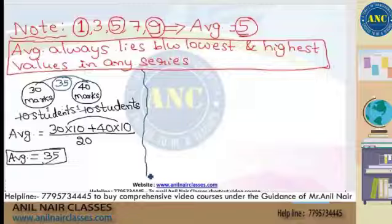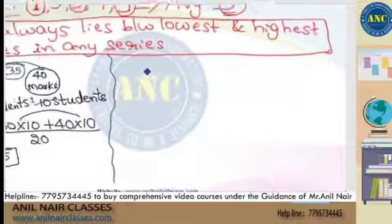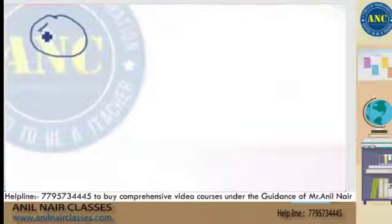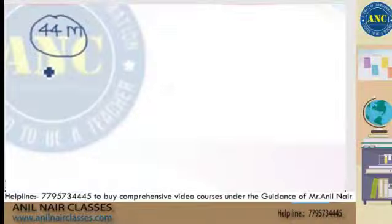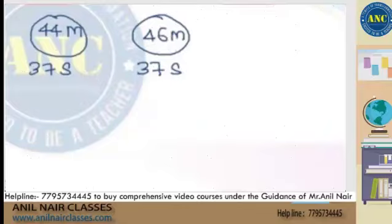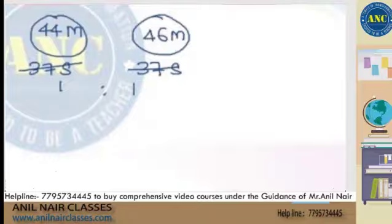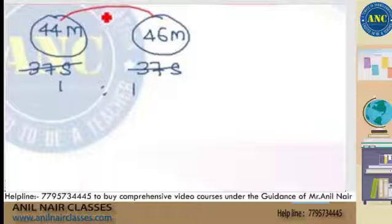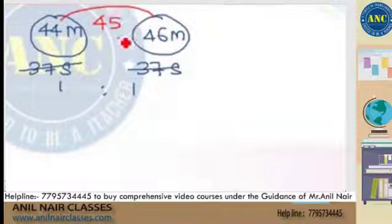One more example: Section A has 44 marks average with 37 students. Section B also has 37 students with 46 marks average. Since the number of students is in the ratio 1 is to 1, I can directly say it as 44 plus 46 divided by 2 — that is 90 by 2, which is 45. The middle value of 44 and 46 is 45.